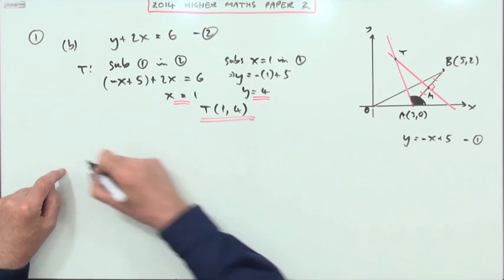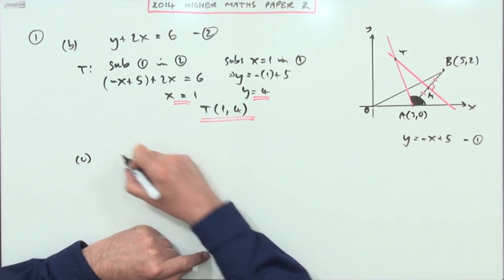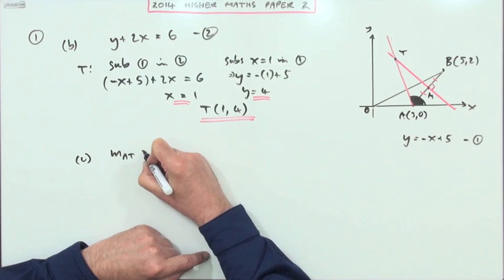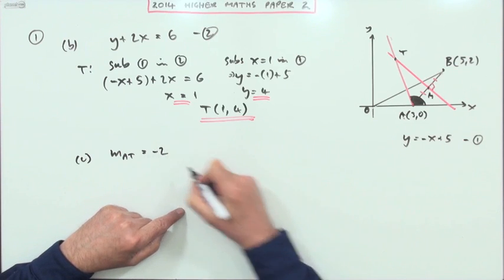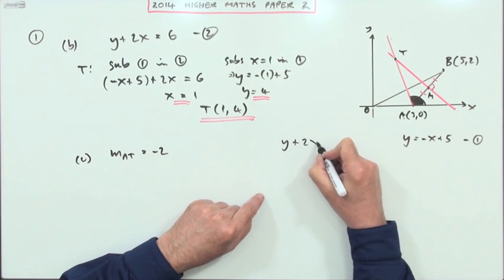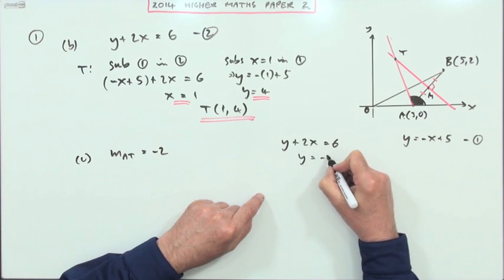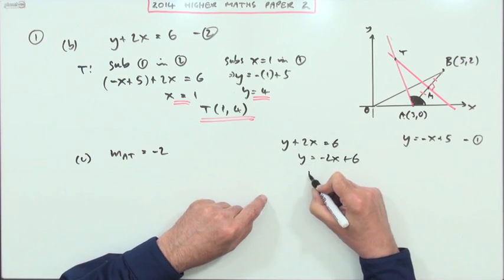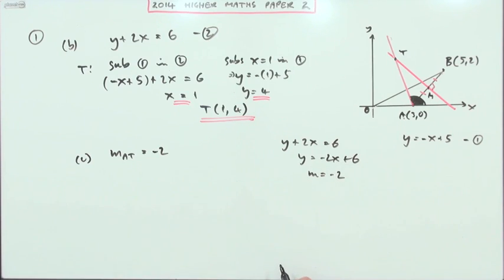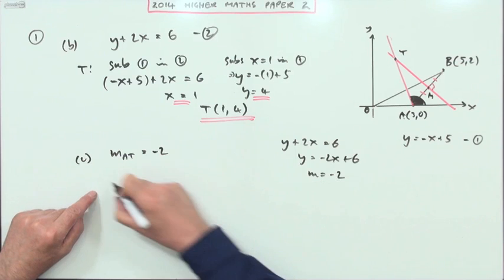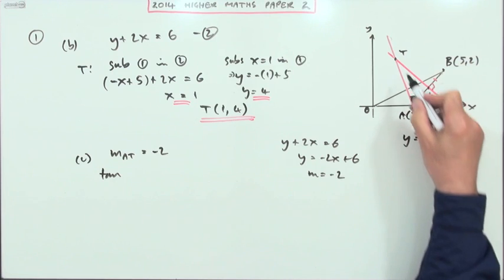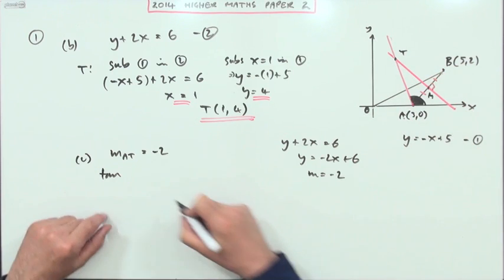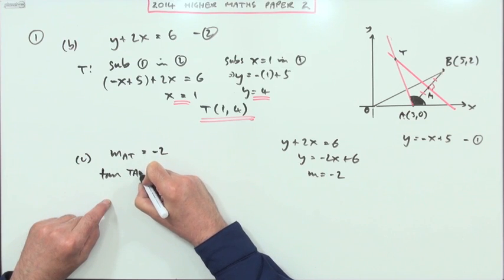I know the gradient of AT because I know the equation of that line. This line has the equation y + 2x = 6. For part C, the gradient of AT—we'll have to take that across, -2. y + 2x = 6, so y = -2x + 6, which means the gradient is -2. If the gradient is -2, that means the tangent of the angle, call it TAX, angle TAX, tangent of the angle is -2.